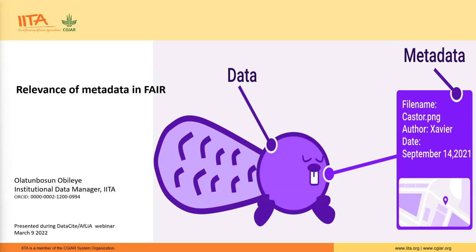Welcome everyone. I'll be focusing more on the relevance of metadata and how we can achieve completeness of metadata. As you can see in this image, there is an insect. If I see the insect as an image, what can I know about it? I would want to know the file name, who is the author or creator, when was it captured, and precisely where — in Africa, Europe, North America, or wherever it came from. So that introduces us to metadata.